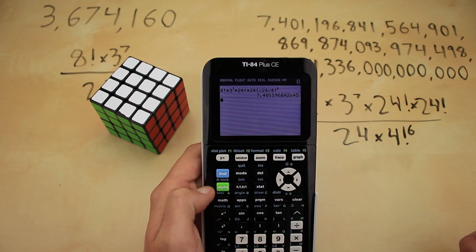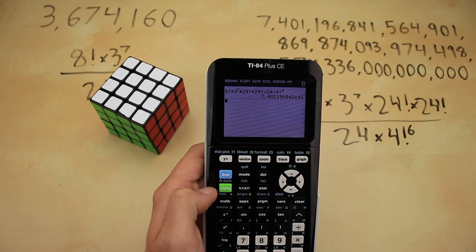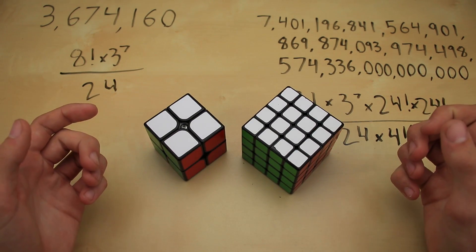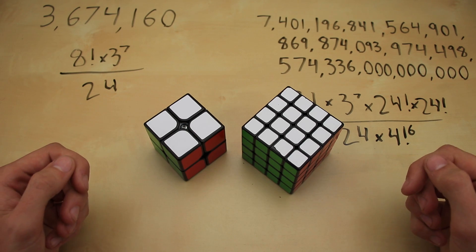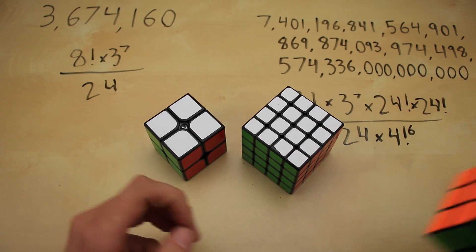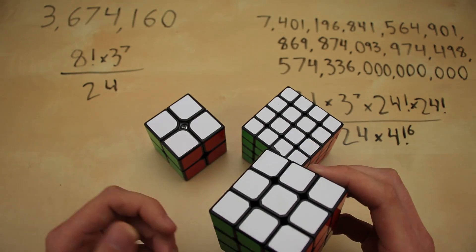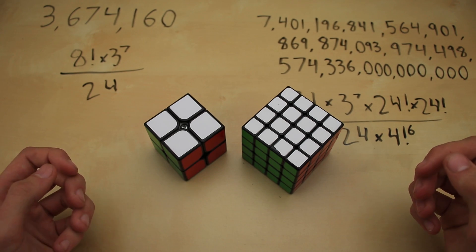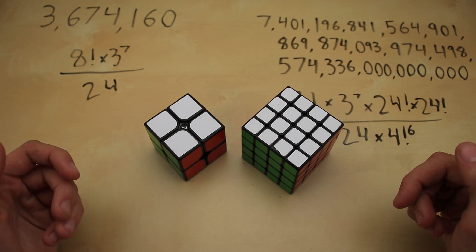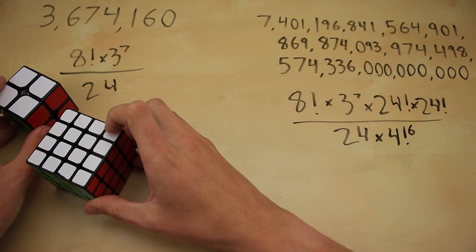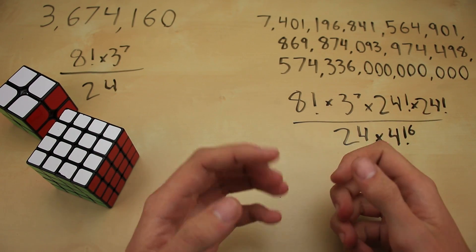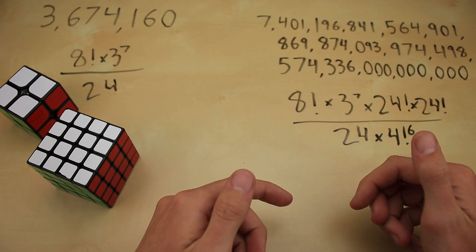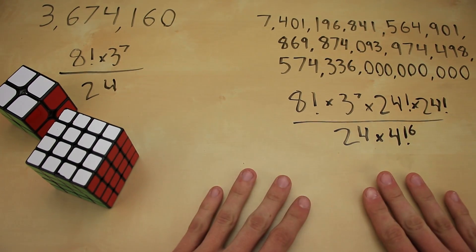You can say that as 7.4 quadradicillian, or you could read out the whole number, but I don't think I have time for that today. That's pretty much it for calculating the total number of possible positions on these two cubes. It was definitely quite a bit more difficult than calculating it on a normal 3x3, but I hope you guys were able to follow along. If there's anything you need help understanding, leave a comment down below. If there are any other mathematical cubing videos you'd like me to make, let me know in the comments. I hope you guys enjoyed, and I'll see you guys next time.